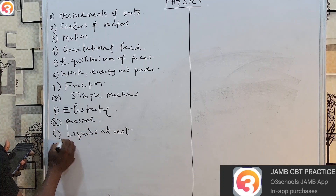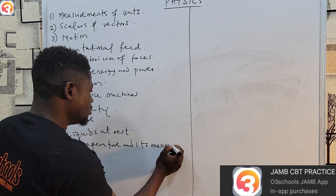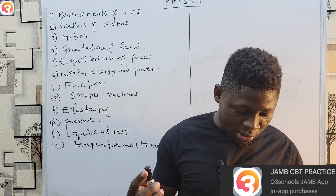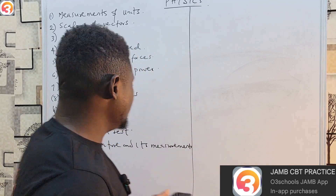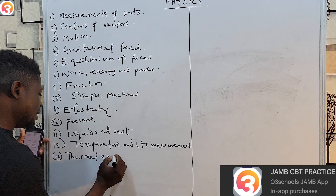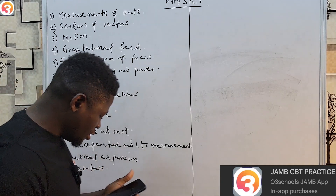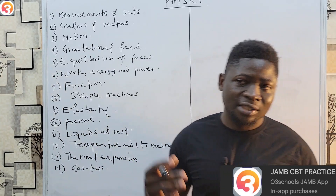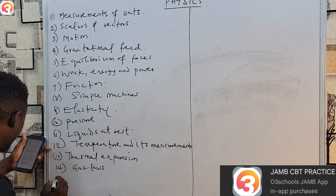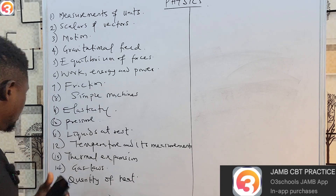The eleventh topic is liquids at rest. The twelfth topic is temperature and its measurement, including how to convert from one temperature scale to another. The thirteenth topic is thermal expansion. The fourteenth topic is gas laws — we look at Boyle's Law, Charles' Law, pressure law, and also the ideal gas constant and the general gas equation PV = nRT. The fifteenth topic is quantity of heat.